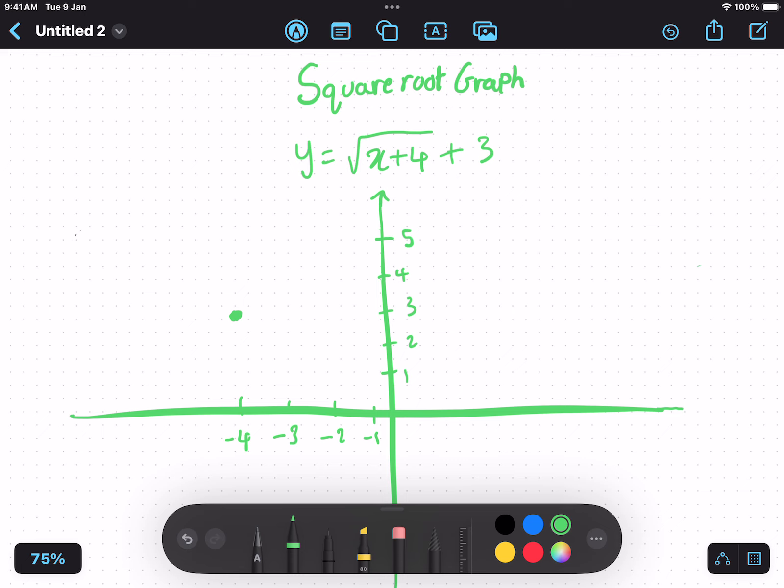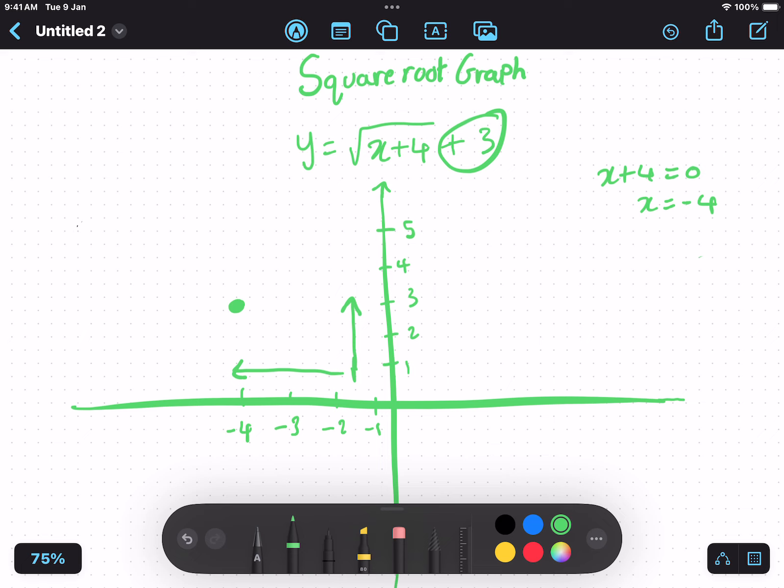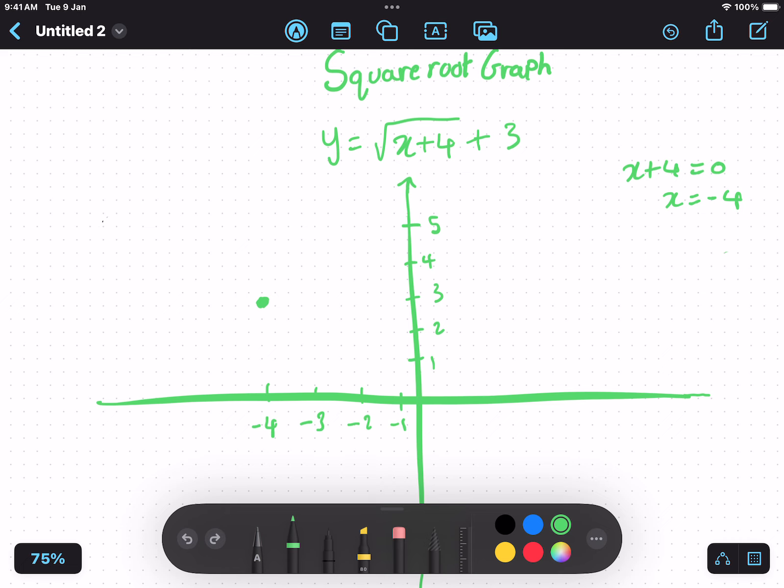So to find the x translation on x, we'll have to make x plus 4 is equal to 0. And we can solve this to find x is equal to negative 4. So we can see on the graph here, negative 4.